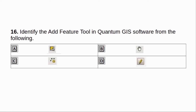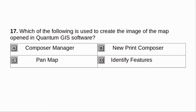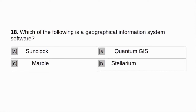Identify the odd feature tool in Quantum GIS software from the following. Answer: C. Which of the following is used to create the image of the map opened in Quantum GIS software? A. Composer Manager. B. New Print Composer. C. Pan Map. D. Identify features. Answer: B. New Print Composer.